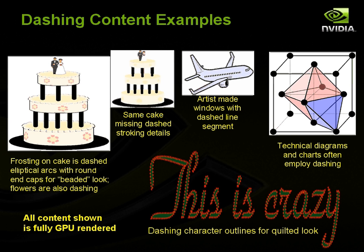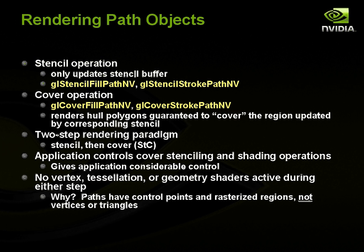Hi, I'm Mark Kilgard, and we're resuming part two of a presentation explaining the NVPath rendering extension for GPU accelerated path rendering. When we left off, we were talking about dashing, and now we're going to continue talking about how you go ahead rendering with path objects in NVPath rendering. This is a stencil-then-cover paradigm for path rendering, so there's a stencil operation and a cover operation, and there's fill versions and stroke versions of each.